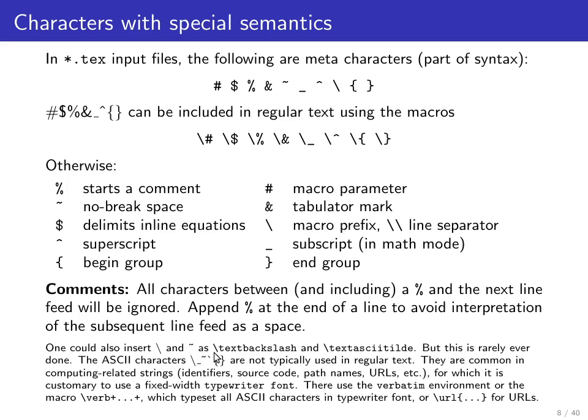In theory you could use \textbackslash and \textasciitilde to insert these in normal text, but in practice this is almost never done. Characters like backslash, underscore, tilde, grave accent, and curly braces aren't typically used in normal text — they appear only in computing-related strings like identifiers, source code, path names, and URLs. Such computing-related strings in typography are typically indicated by switching to a fixed-width typewriter-like font, and TeX provides macros for this purpose.